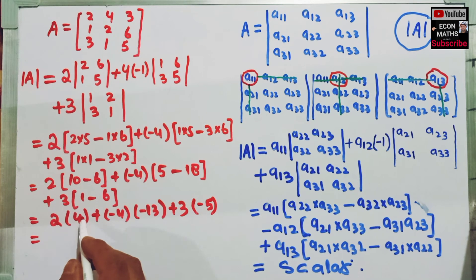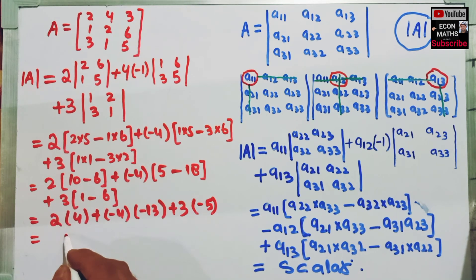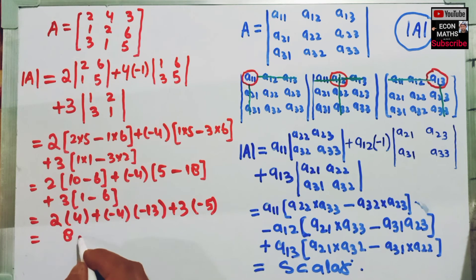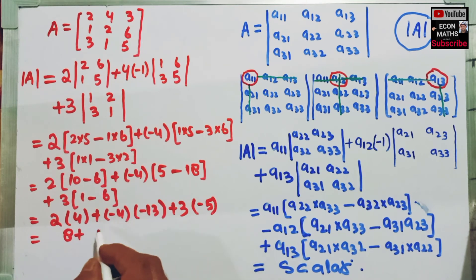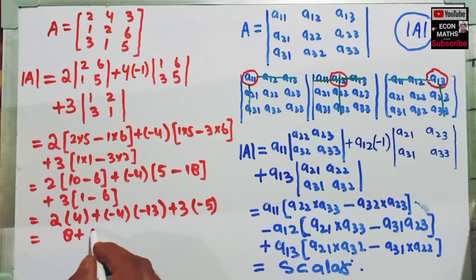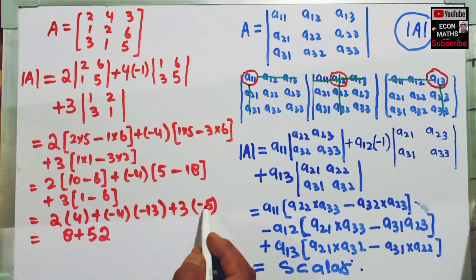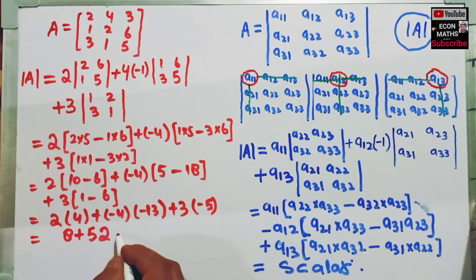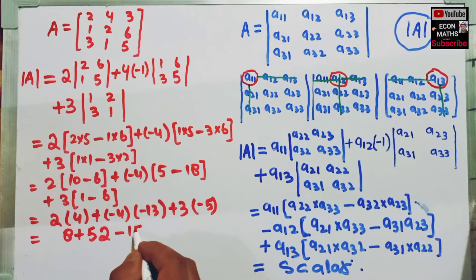This will become 2 times 4 is 8, plus minus 4 times minus 13, this will become plus 52, and 3 times minus 5, that is minus 15.